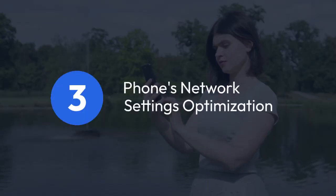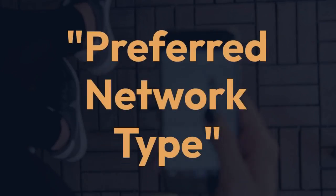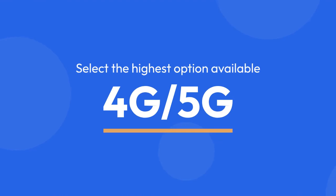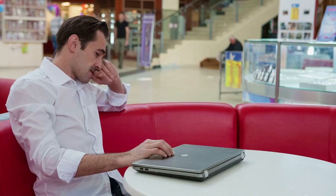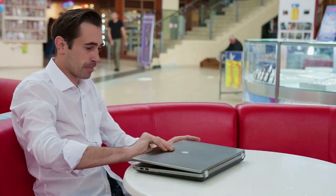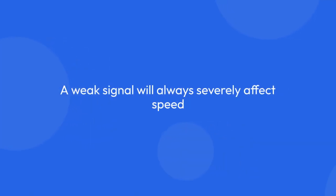3. Phone's network settings optimization. Within your phone's network settings, look for options like preferred network type and select the highest option available, like 4G or 5G. Some phones also have a setting to prioritize tethering data — activate it if present. Check also that you have a strong cellular signal, as a weak signal will always severely affect speed no matter what you do.